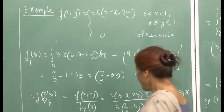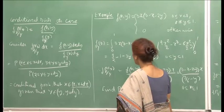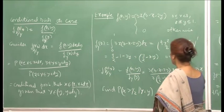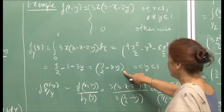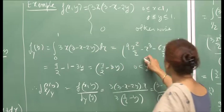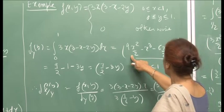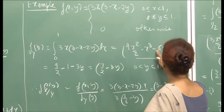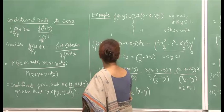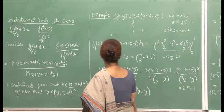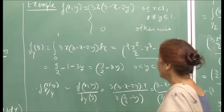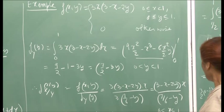To find out the conditional PDF of x given y, I need to compute the marginal of y. When you integrate 3x(3-x-2y) over x from 0 to 1, this gives the expression 9/2 minus 1 minus 3y. Remember that capital Y is fixed at small y, so this is the marginal of y — it will be a function of y only.